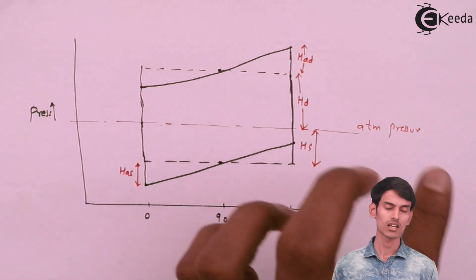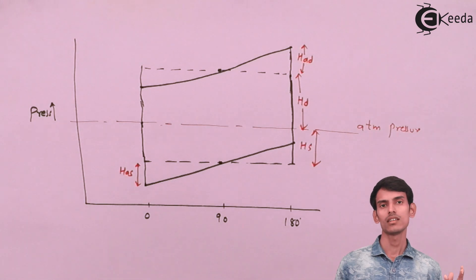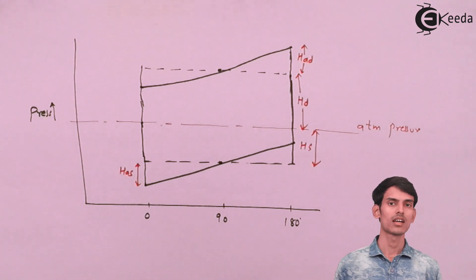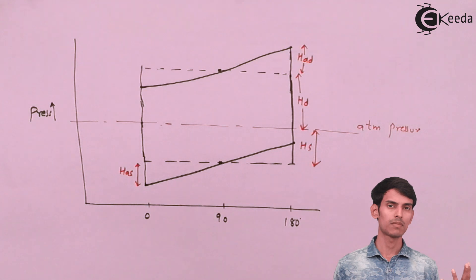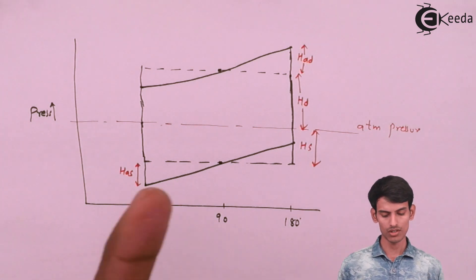You get something like a parallelogram when you include the HAS and HS. When you only cover the HS and HD, you get a kind of rectangle. The effect of HAS and HAD at the inlet of the pump and at the pumping side and at the delivery side is exactly opposite. This is how the diagram looks.